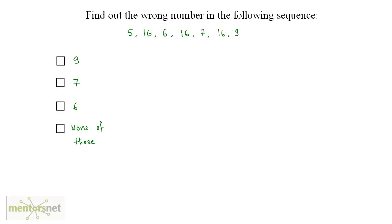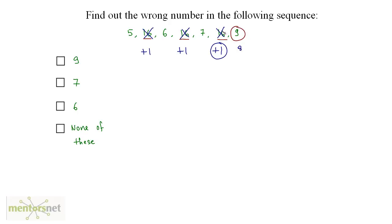For the next question, 16 appears as a constant at every alternate position. Removing those 16s, the other numbers are 5, 6, 7 — each increasing by 1. So the next number should be 8, following the +1 pattern. The 9 shown is incorrect and should be 8, so option A is the correct answer.